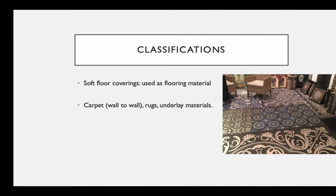We also have soft floor coverings. This includes any material used for flooring. The most common is wall-to-wall carpet — when we use the term 'carpet' that means wall-to-wall, covering most or the entire room. Rugs are for specific areas — those rectangular or round pieces are rugs, not carpet. It also covers any underlay materials used.